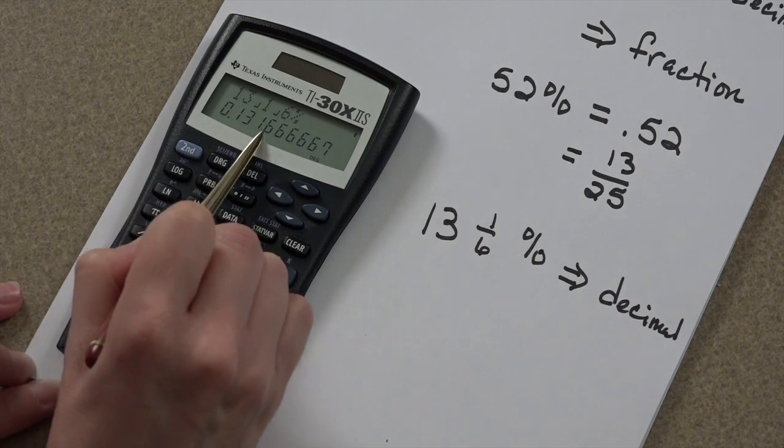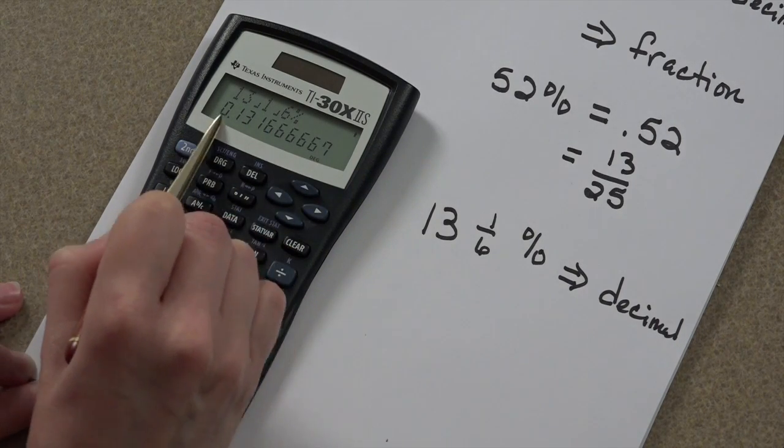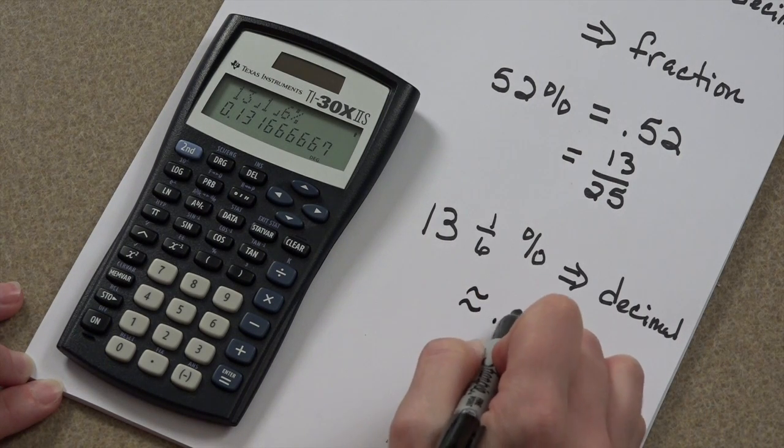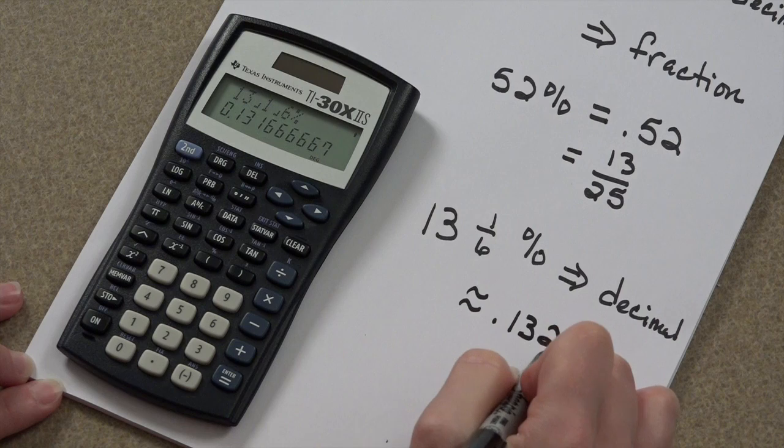Now, the decimal equivalent is about 0.132.